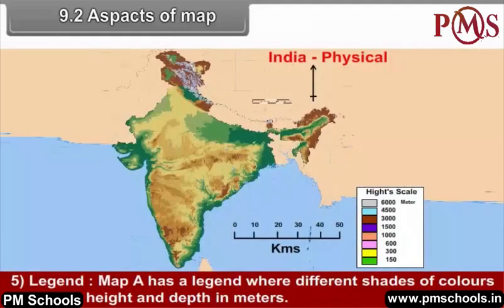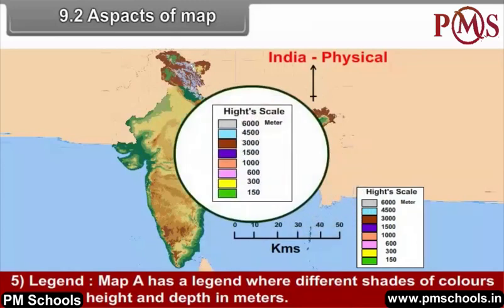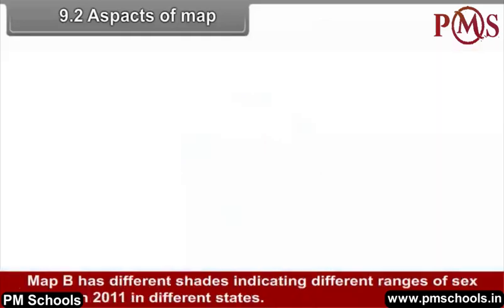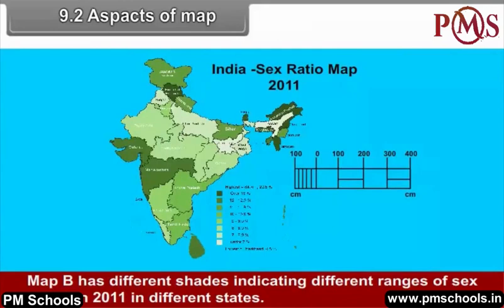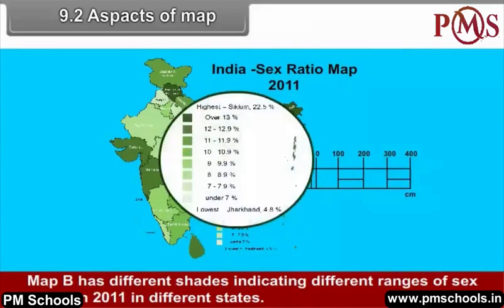5. Legend: Map A has a legend where different shades of colors represent height and depth in meters. Map B has different shades indicating different ranges of sex ratio in 2011 in different states.